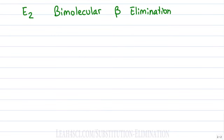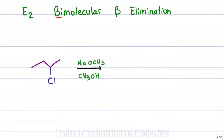E2 reaction is a bimolecular beta elimination. Bimolecular means two molecules reacting at the same time — no intermediate, a fast one-step reaction. For this E2 reaction, we'll look at a secondary leaving group reacting with NaOCH₃ in CH₃OH, recognizing that Na is a positive spectator giving us a negative base — in this case CH₃O⁻, or methoxide. We'll add heat to help favor E2 over SN2.